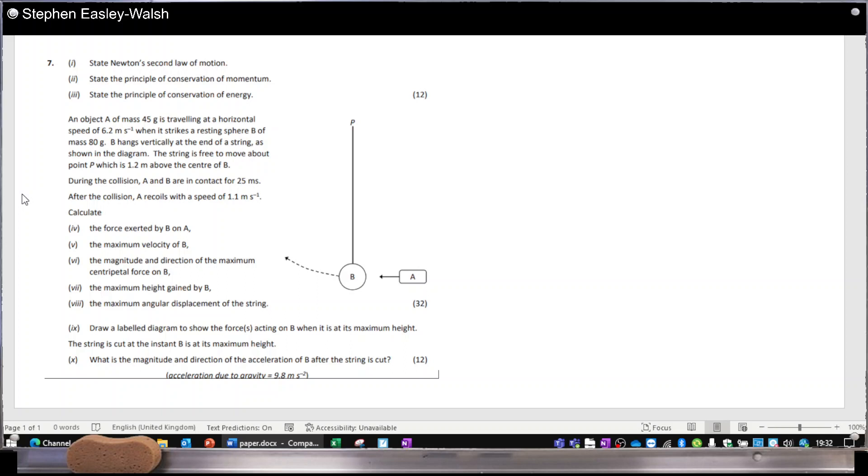The principle of conservation of momentum says that the total momentum in a system - what is it - the total momentum in a closed system before a collision takes place is equal to the total momentum in the closed system after the collision takes place, provided that there's no net external force acting.